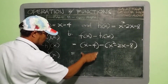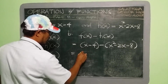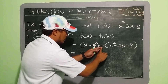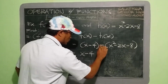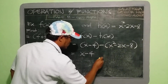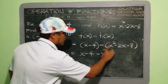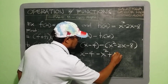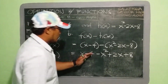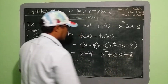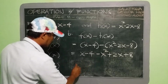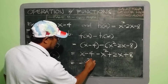Removing the grouping symbol, since the subtraction sign is outside, we multiply negative to all terms inside the group. So: negative times positive x² gives −x², negative times negative 2x gives positive 2x, and negative times negative 8 gives positive 8. We combine to get: x − 4 − x² + 2x + 8.